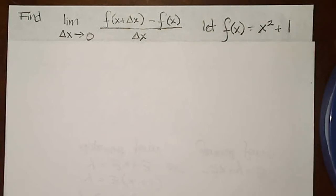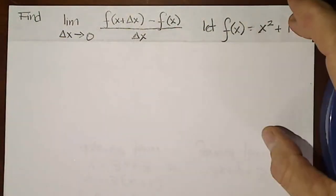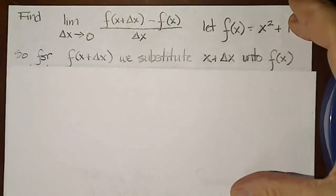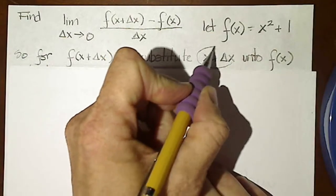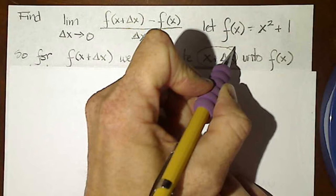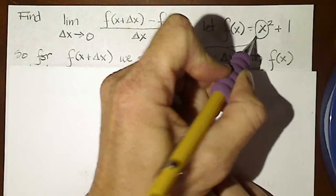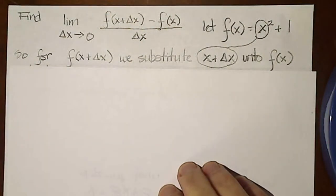Because if we are to make our substitution, what we're going to do first is say for f of x plus delta x, we substitute x plus delta x into f of x where the variable is.